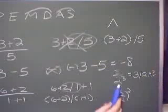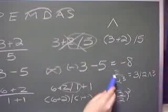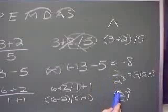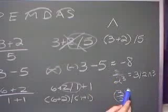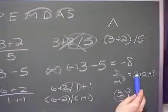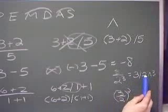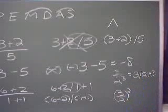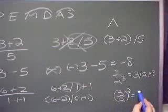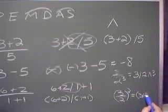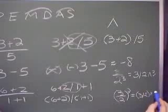Now how is this problem different? In this problem you want the whole quantity 3 divided by 2, all raised to the third power. If you write it as 3 divided by 2 caret 3, the only thing it's going to raise to the third power is the 2. So to fix that, simply use parentheses: parentheses 3 divided by 2, close parentheses, caret 3.